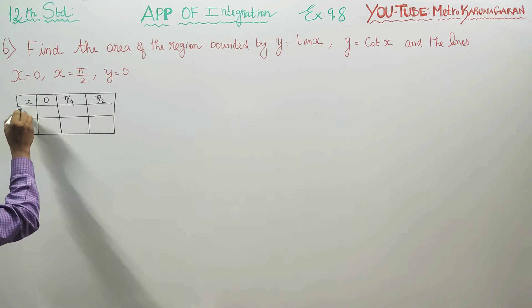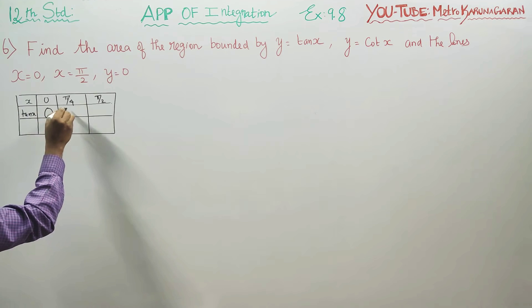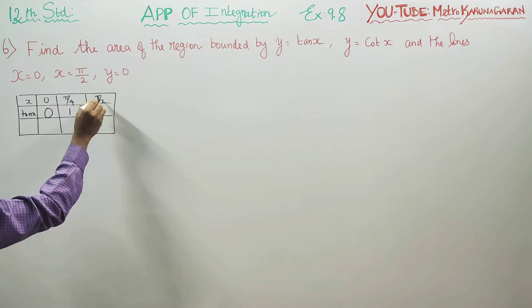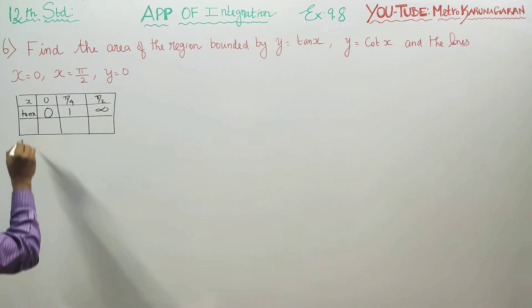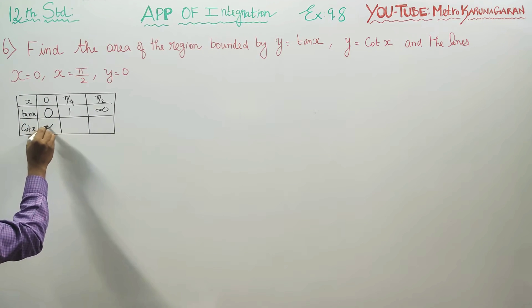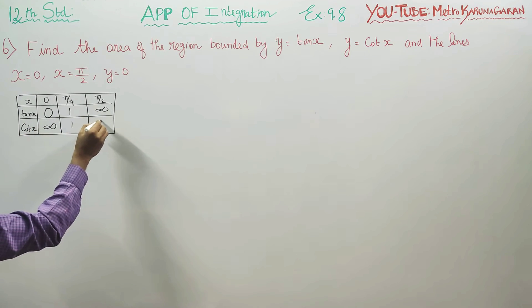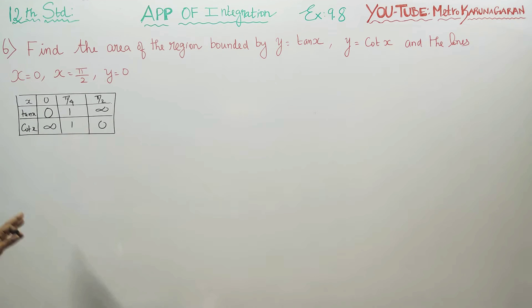First of all, tan x is 0, tan 45 is 1 but tan 90 is infinity. Coming back to cot x, cot 0 is infinity, cot 45 is 1, cot 90 is 0. These are the actual values of tan x and cot x for 0, pi by 4, pi by 2.